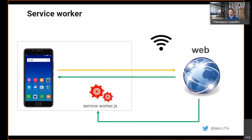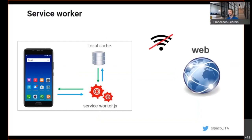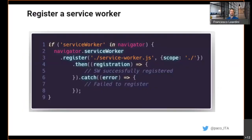The first time we access our website, we get the response and also download the service worker file, which gets installed on the client side. According to how we implemented the service worker, we might already start caching some assets locally. From that moment on, following requests will be intercepted by the service worker, which will provide the response from the cache if available — meaning we don't even need to go over the network. This has two benefits: on one side, the response will be extremely quick because we have the needed data locally in the cache; on the other side, our application will still continue working and providing data even when the user is offline. Everything starts with the registration of the service worker, which if successful allows proceeding with the installation and activation steps.